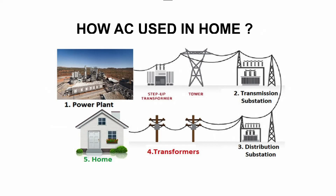Then the electricity goes to the transmission substation. From the transmission substation, it goes to multiple distribution substations, then to a transformer where the step-down activity is performed. The voltage is reduced to 220 to 230 volts and then it is given to the house. This is the way power is generated and routed, finally reaching our homes.